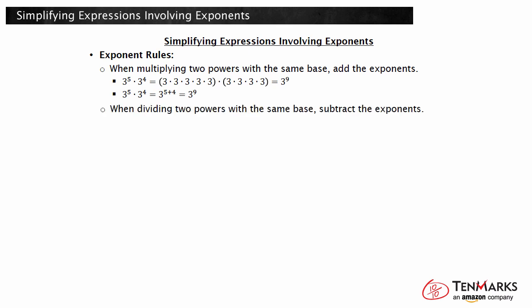When dividing two powers with the same base, you subtract the exponents. 7 to the sixth divided by 7 to the fourth would equal 7 times itself 6 times over 7 times itself 4 times. You can cancel out 4 of the sevens on top and bottom, leaving just 7 times 7 on top, which is 7 squared. As you can see, you could have subtracted the exponents 6 minus 4 to get the exponent of 2.